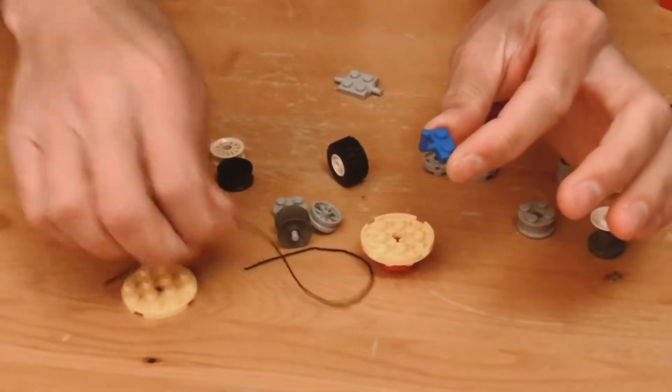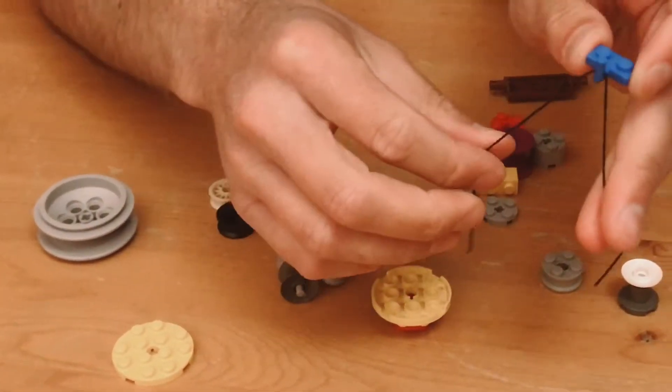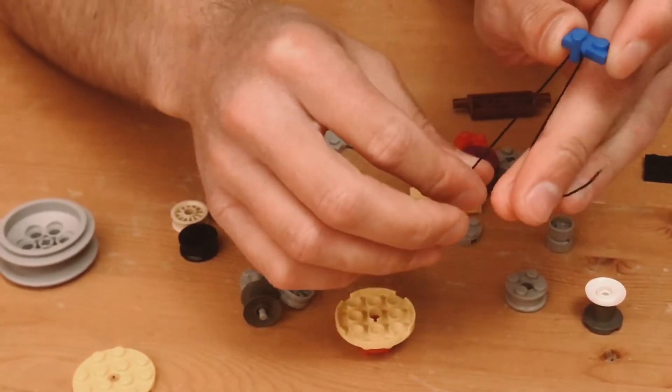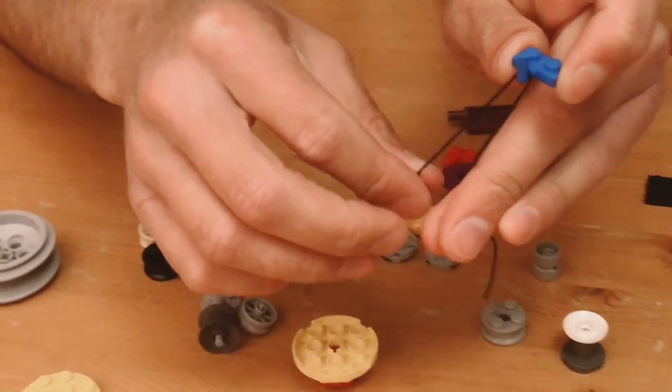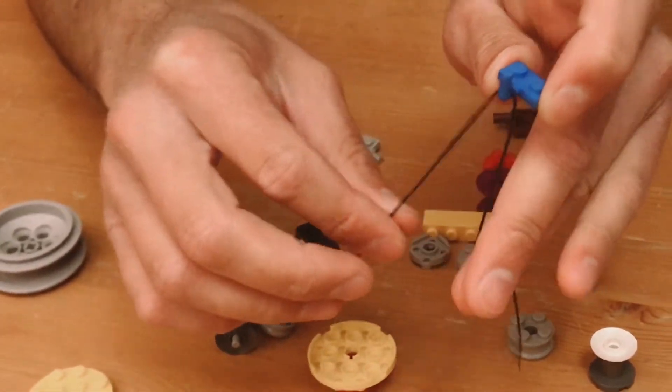You can also use a static object like this pin as a pulley. The rope can run over this rounded pin and while there's going to be more friction than a pulley, this will work as a redirect for a rope.